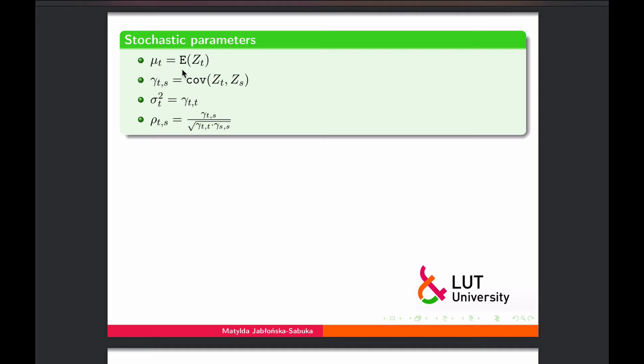So mean value of a stochastic process is just the expectation of the random variable. Covariance of the random variable is basically covariance of that random variable at two time points. Then variance, of course, is covariance at the same time point. And then correlation coefficient is that covariance rescaled by variances at the two specific time points. And these stochastic parameters are quite important in identifying which type of stochastic process we are dealing with.